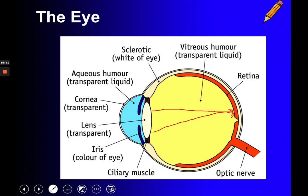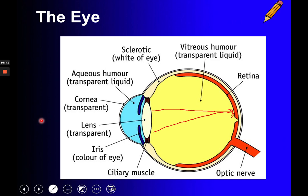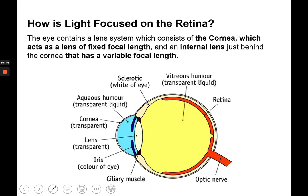Our eye acts as a lens. The lens in the eye bends light to focus it onto the retina, which is like a screen at the back of the eye. Depending on light conditions, the ciliary muscles above and below the lens contract or extend to change the shape of the lens so that light always focuses on the retina. The retina is connected to the optic nerve, which sends signals to the brain to form the images we see.